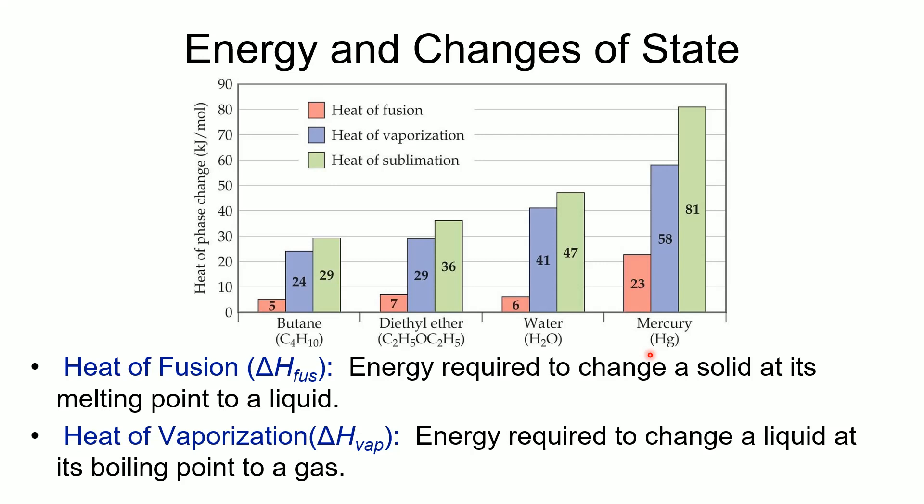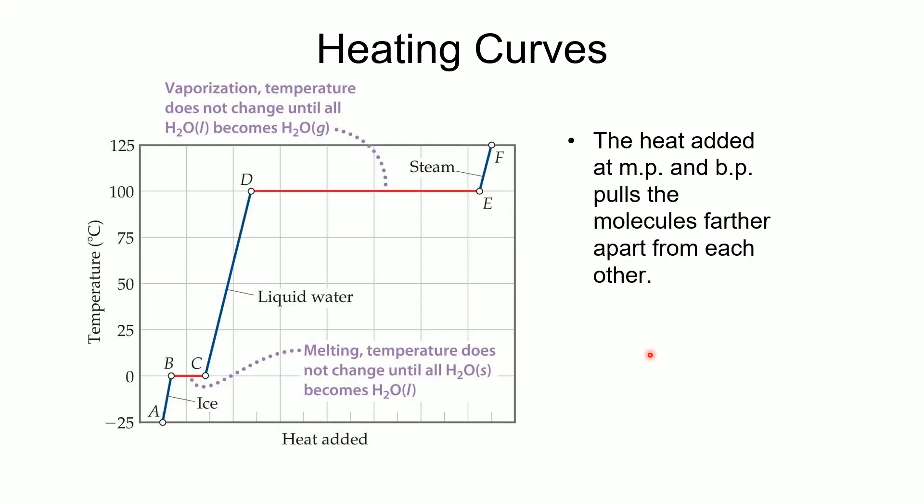When we look at the energy required to convert something from solid to liquid and then from liquid to gas, we'll always see that the heat of vaporization — the energy required to convert a liquid into a gas — is always greater than the heat of fusion. When melting, we only need molecules to slide past each other; when vaporizing, we must completely overcome all intermolecular forces. The heat of sublimation always equals the heat of fusion plus the heat of vaporization.